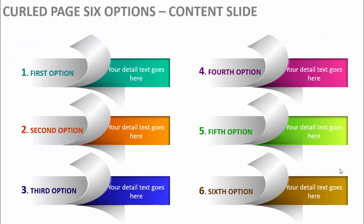In today's tutorial I am going to show you how to make a six option curled page infographic slide in PowerPoint. I have added six different options with different colors, the title, and the first option. You can see the curl page effect, and you can add detailed text. I've added the shadow effect at the bottom. This is the second option with different colors, so all six options are there.